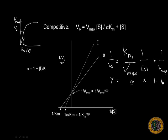So for competitive inhibition, we'll notice that our Km increases in this direction, and that increase is by alpha. Alpha times Km equals Km apparent.